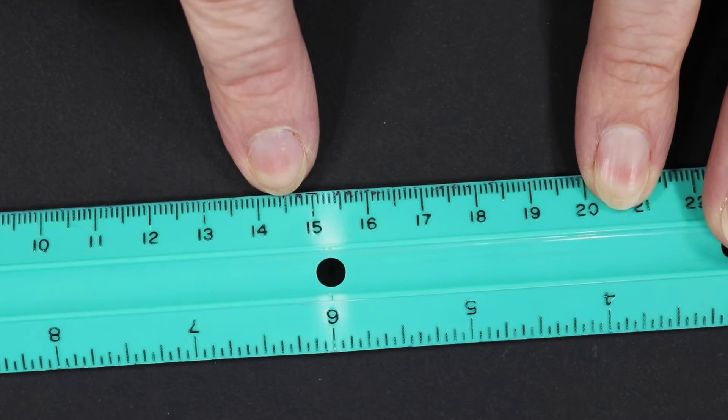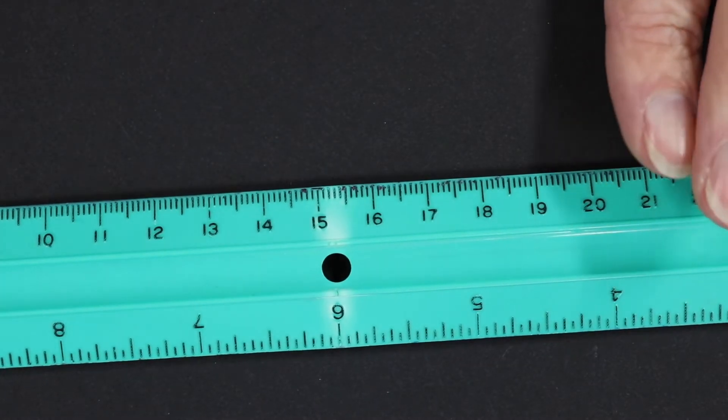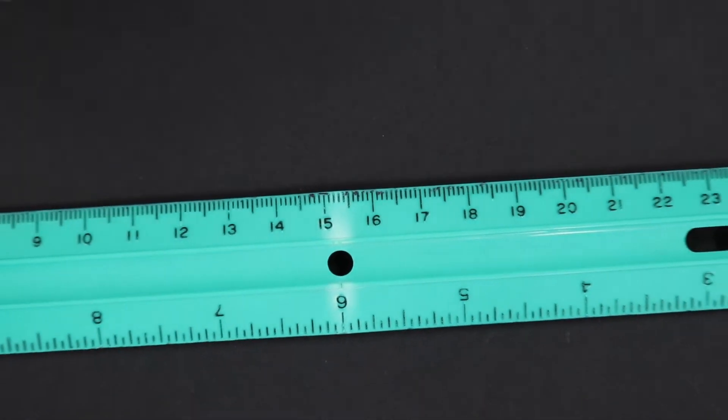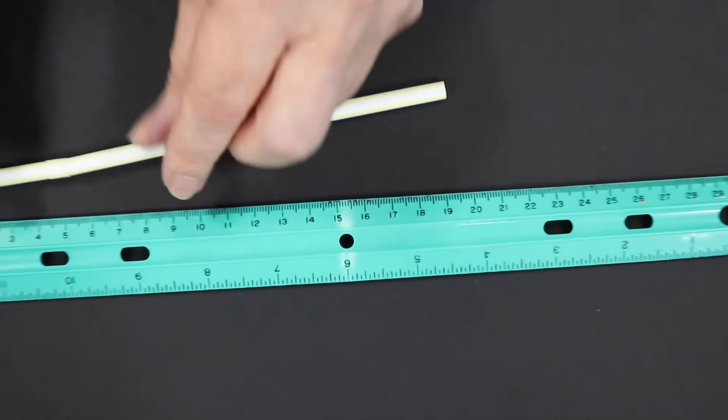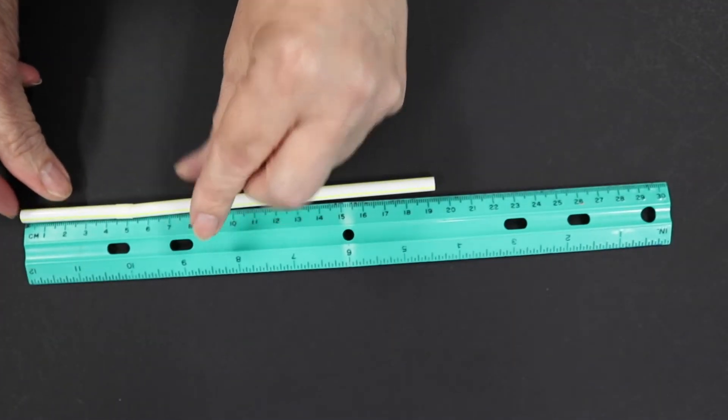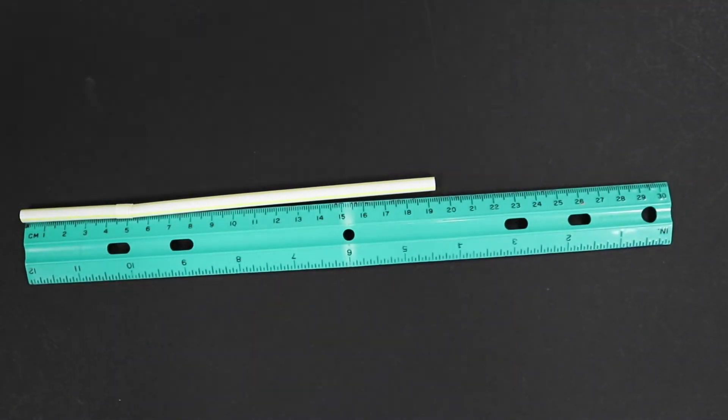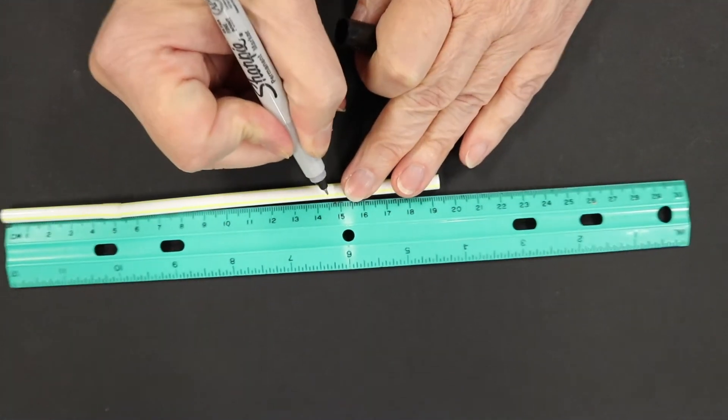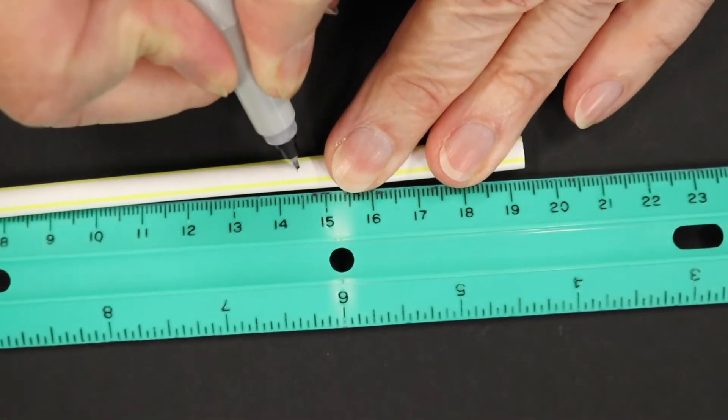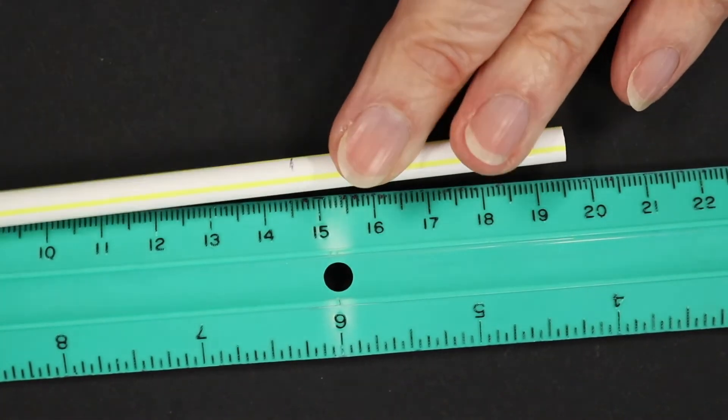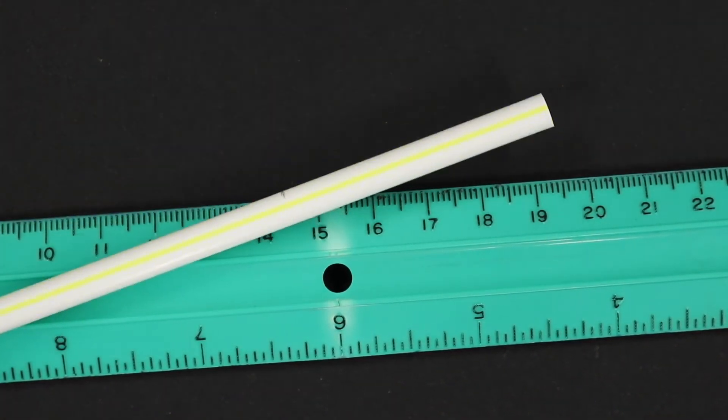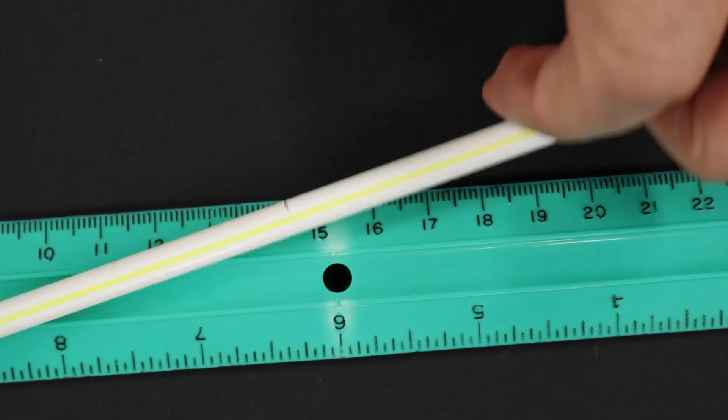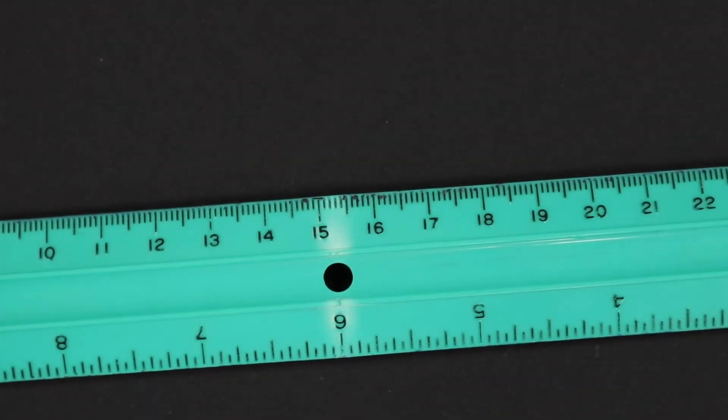To measure a straw 14.5 centimeters, first line up the straw with the end of the ruler. Mark the straw at the 14.5 line, right here, and then cut it. Use the same idea to find all the measurements coming up.